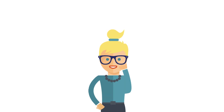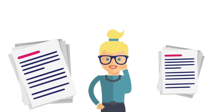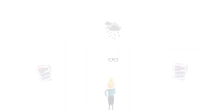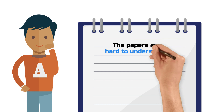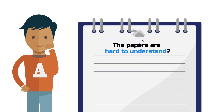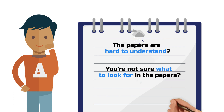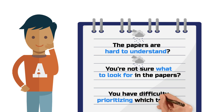You would like to read scientific papers fast and effectively, but you keep facing one of these challenges? The papers are hard to understand and only about 10% of the information sticks? You're not sure what to look for in the papers to gather input for your own research paper? Or you have difficulty prioritizing which papers you should even read?